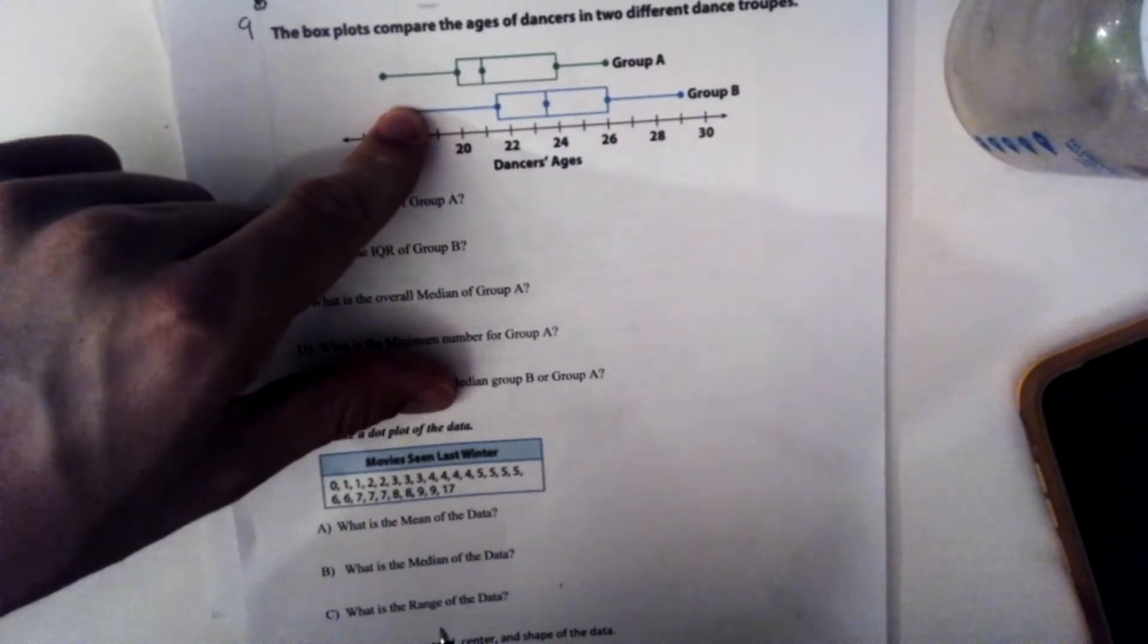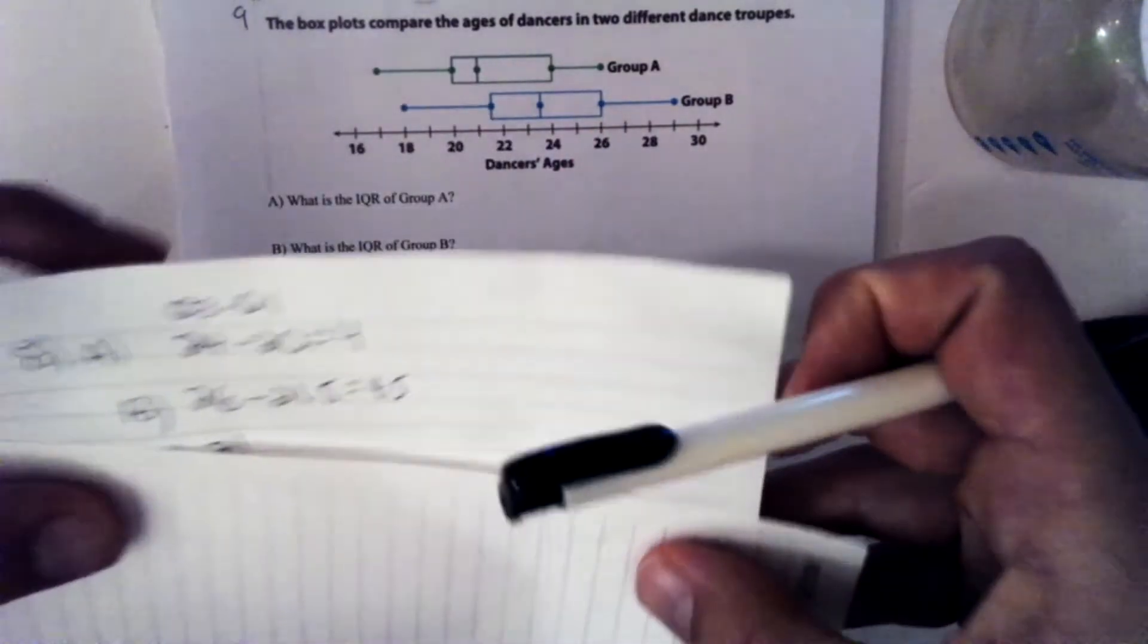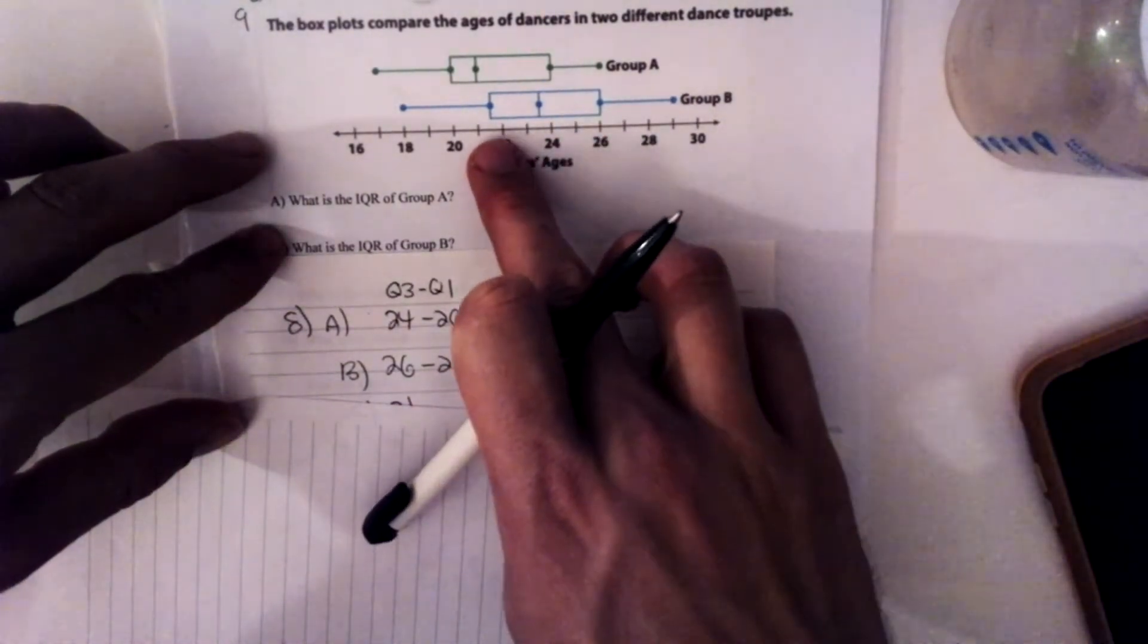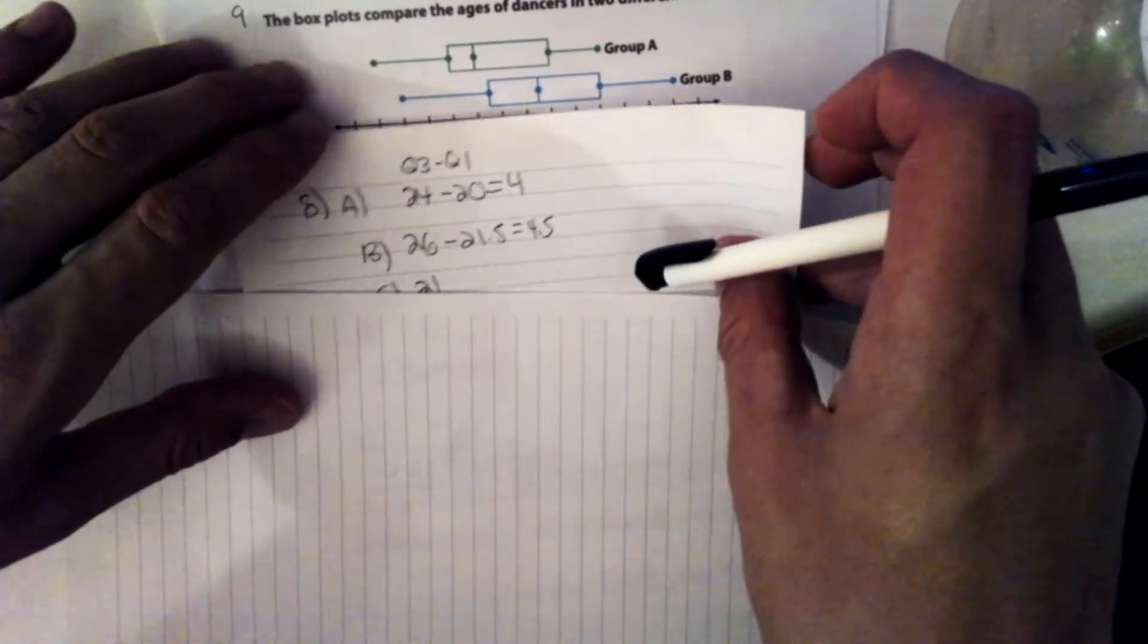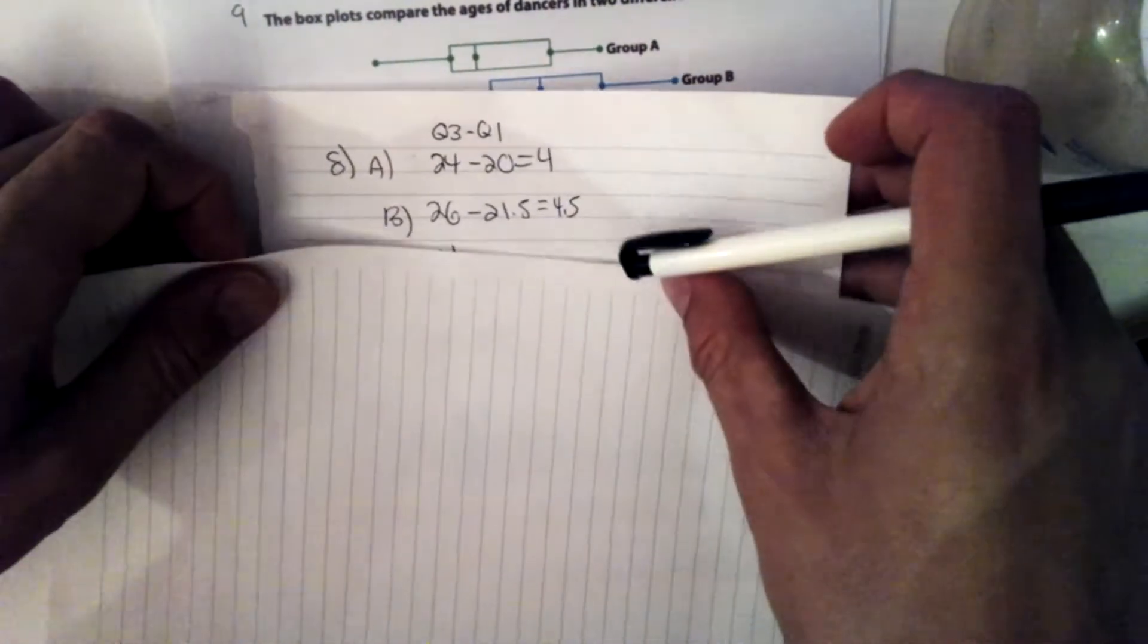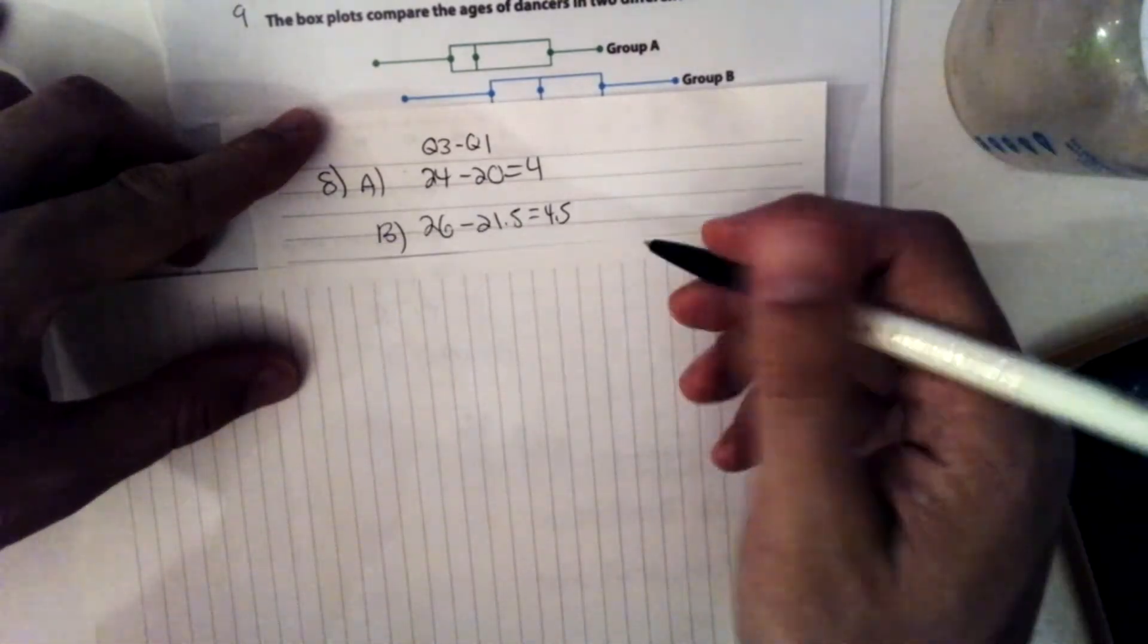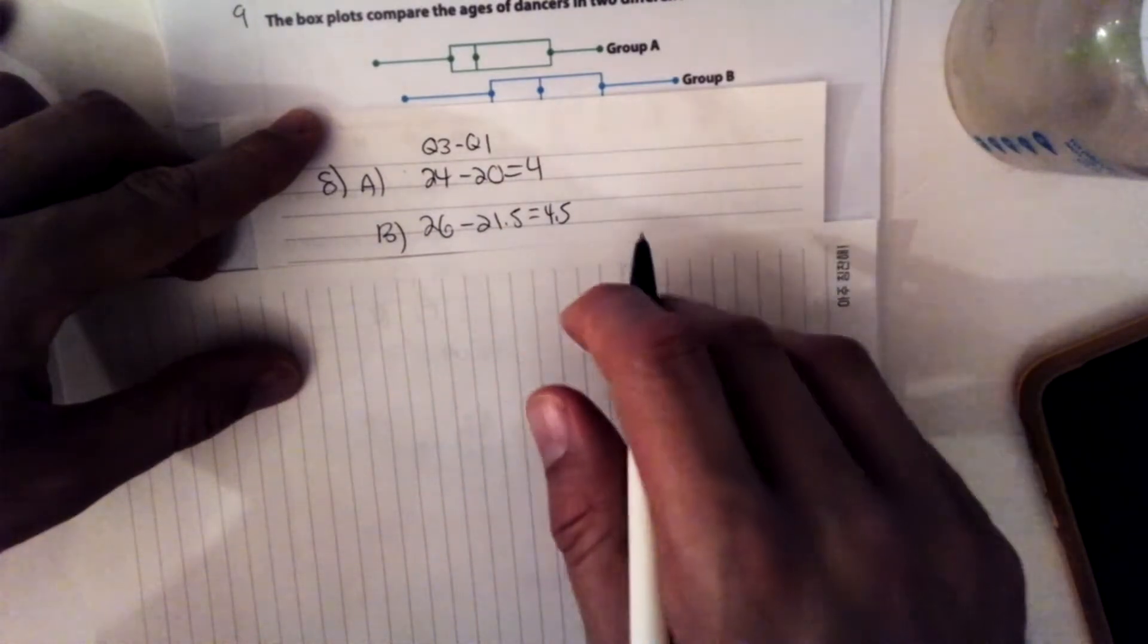He says, what is the IQR of group B? So I'm looking here at group B. And I want to find the range between these two quartiles. So this is 26. And this looks like this is about 21.5, because it's not quite 21. So to find the IQR here, I'll do 26 minus 21.5 to get 4.5 from IQR for group B.